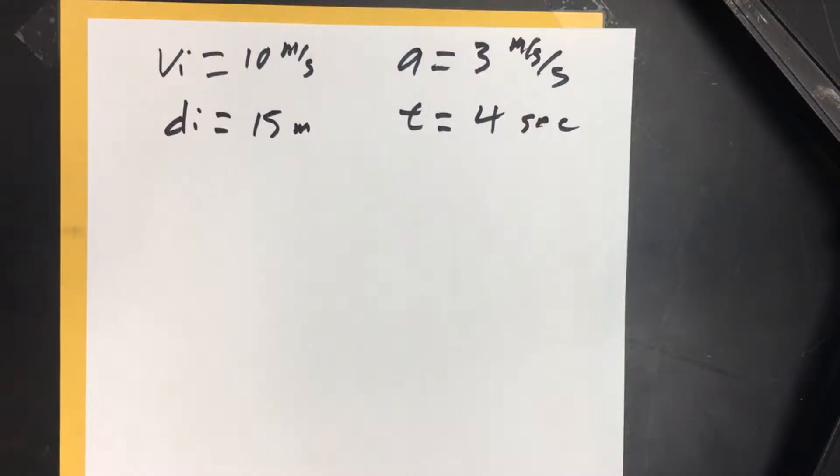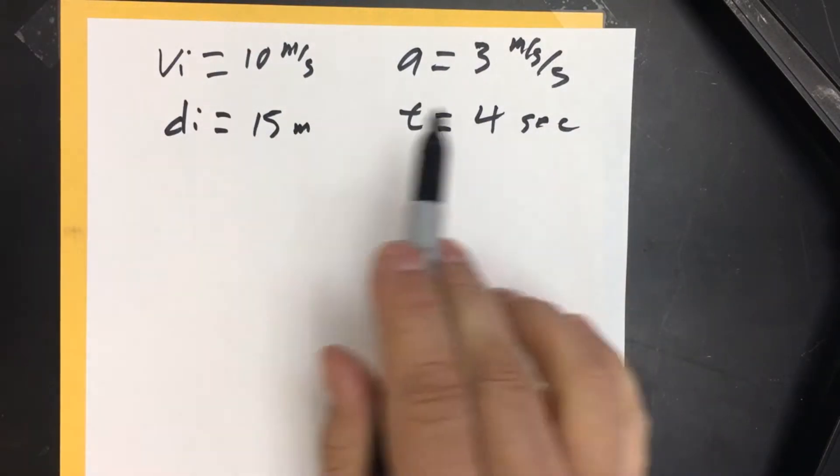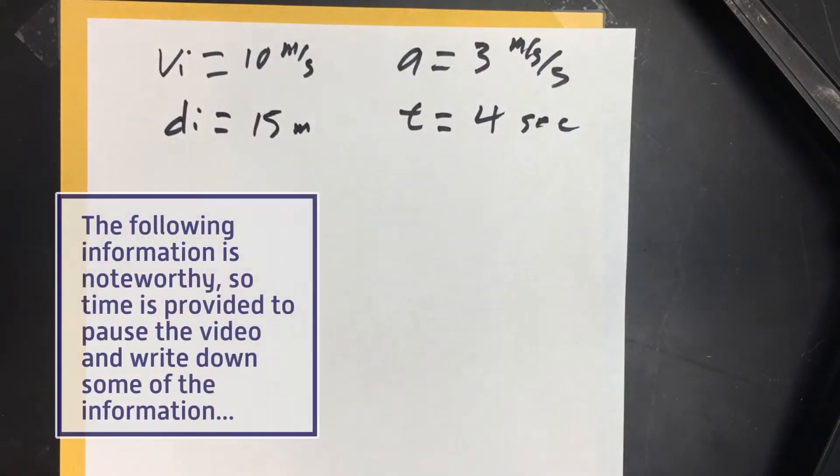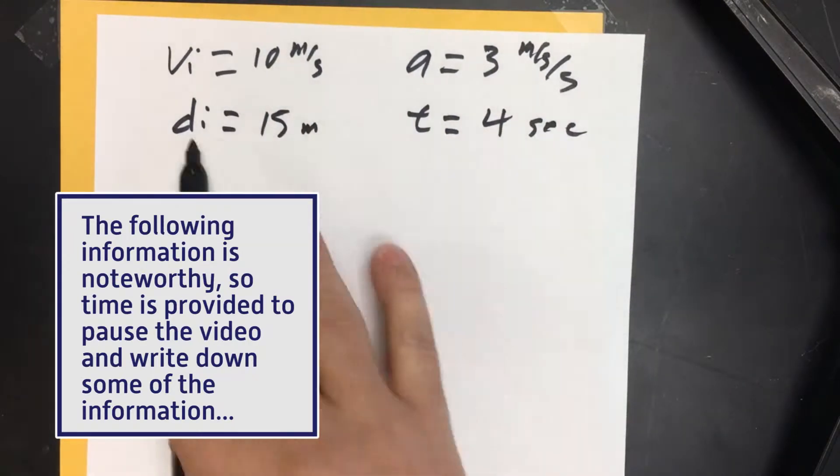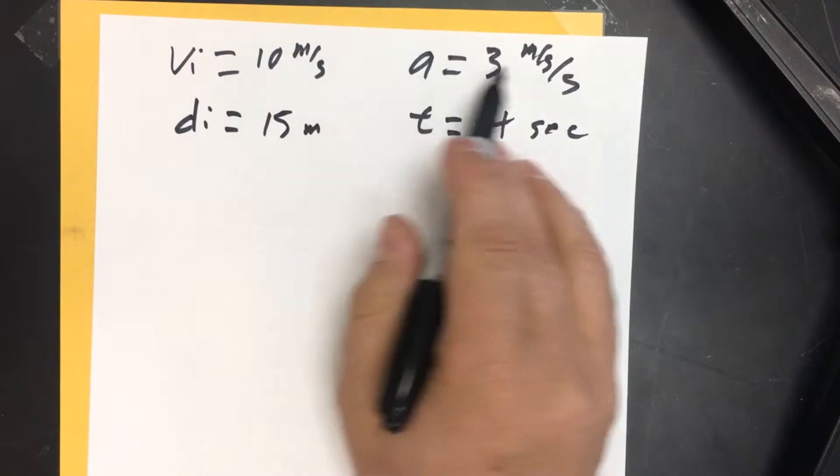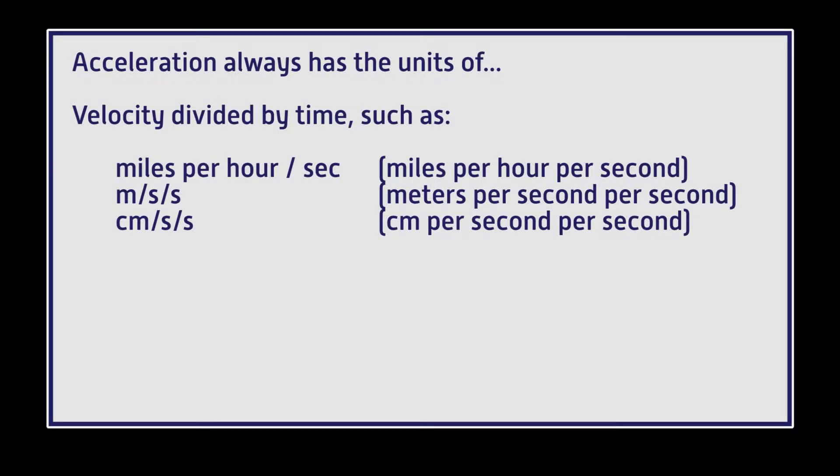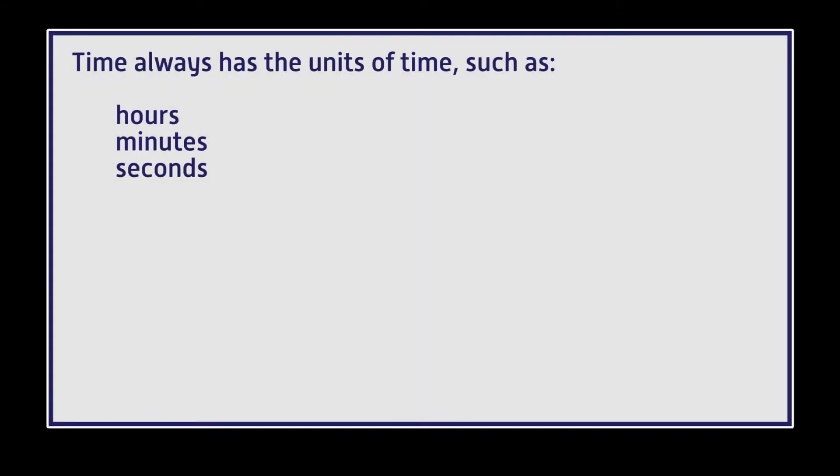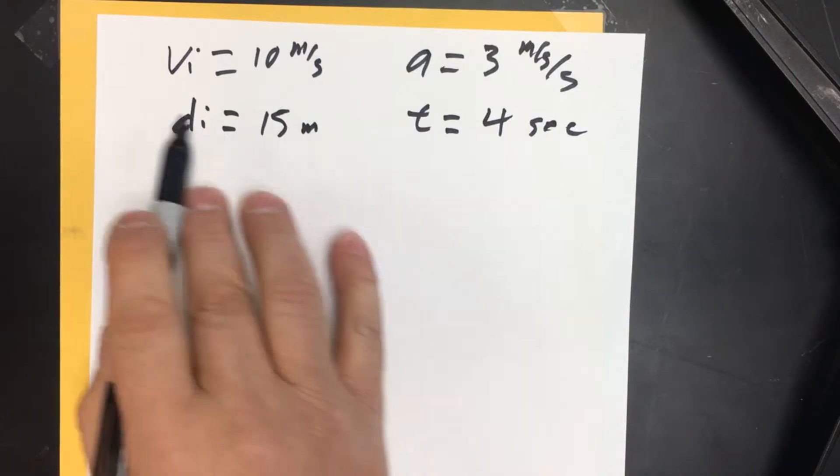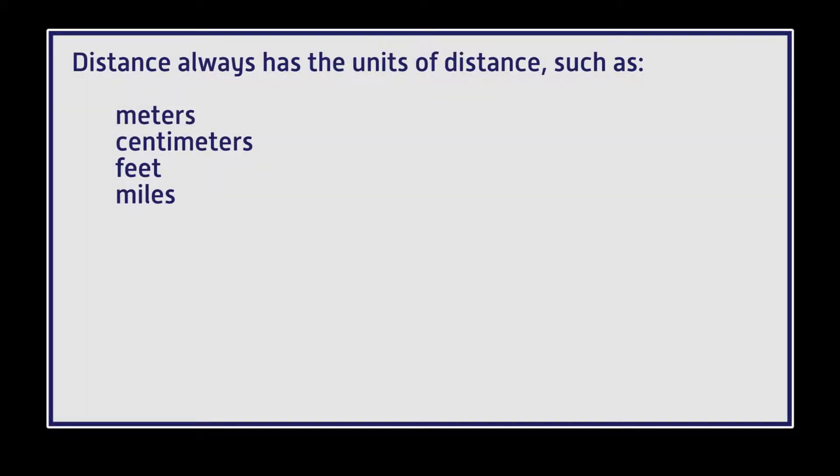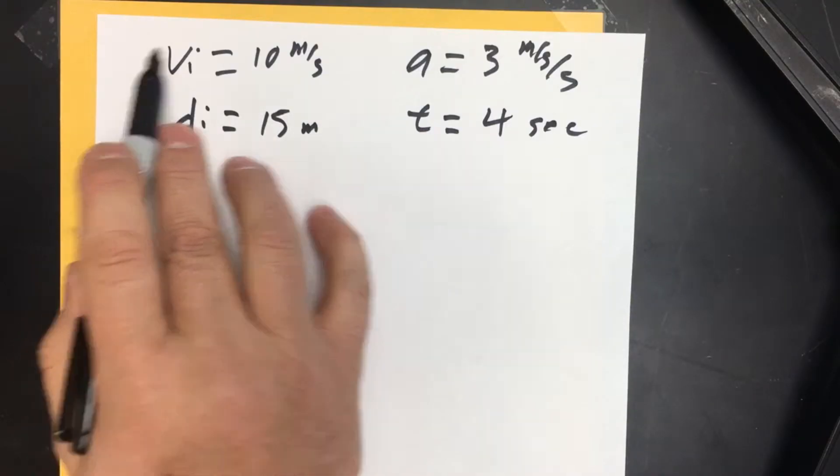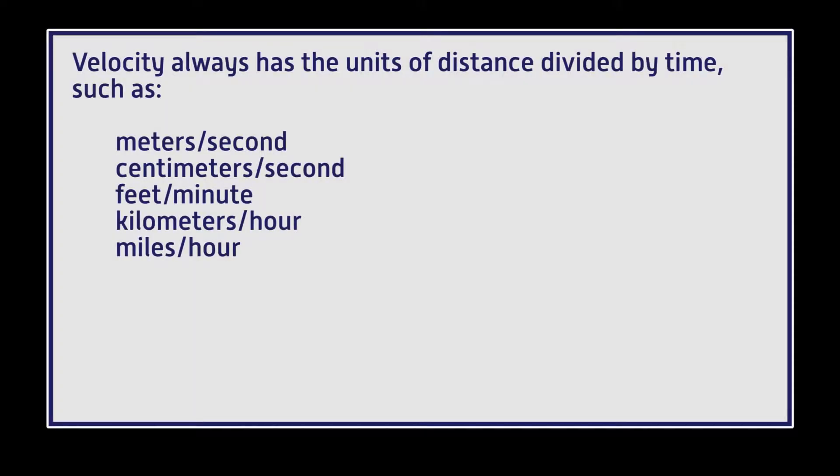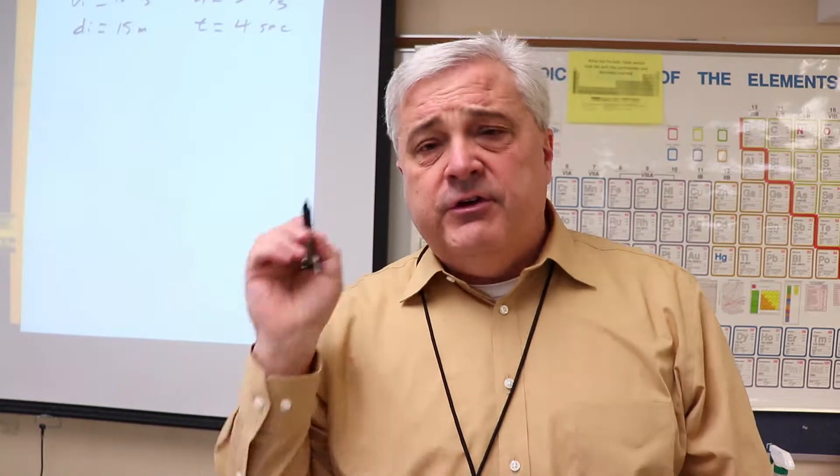This becomes one of the hardest parts for beginning physics students: identifying where all these numbers go. It's possible to just look at the units on the numbers given and know. Acceleration is always going to be a velocity over a time, time is going to be hours, minutes, or seconds, distance is going to be distance, velocity is going to be a distance divided by a time. So just kind of using the units you can figure out where they go in the equation.